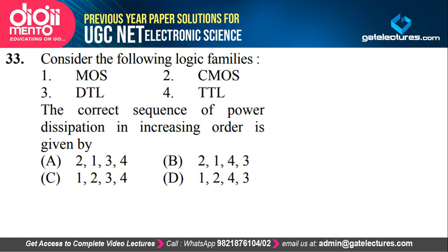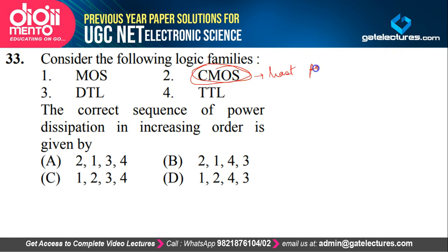Come to the next question. Consider the following logic families: MOS, CMOS, DTL and TTL. DTL is diode transmission logic. CMOS is complementary metal oxide semiconductor. They are asking the correct sequence of power dissipation in increasing order. Firstly we have to put the logic family which has least power dissipation. CMOS is famous for least power dissipation — it has the least power dissipation among all the families. So CMOS is going to be the least — this eliminates two options C and D.